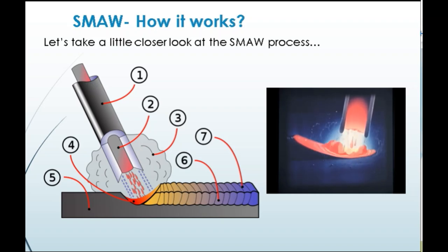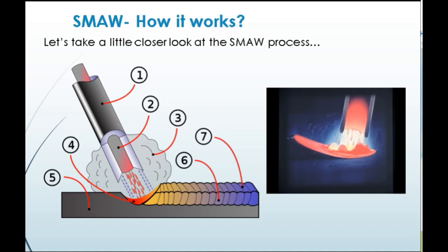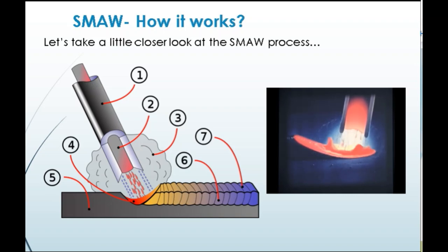Let us understand what happens at the welding zone. Here, 1 and 2 are parts of the welding electrode — 1 is the electrode and 2 is the base metal. 3 shows the shielding gases generated due to burning of the coating. 4 is the weld pool. 5 is the base metal. 6 is the solidified weld metal, and 7 shows the slag.